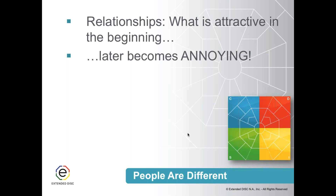When you go on that first date or meet someone for the first time, you're really trying to make adjustments and impress. But after a while, stress or just time means you don't want to make those adjustments anymore, and those behaviors you once found interesting start to become irritating. Then you revert to your natural style, the other person feels friction and reverts to theirs, and now you are very different and neither wants to modify their behavior.